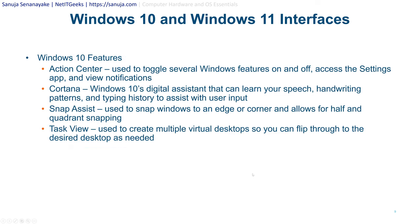Windows 10 features include the Action Center, which is used to toggle several Windows features on and off, access the Settings app, and view notifications. Cortana is Windows 10's digital assistant that can learn your speech, handwriting patterns, and typing history to assist with user input. Snap Assist is used to snap windows to an edge or corner, allowing for half and quadrant snapping. Task View is used to create multiple virtual desktops so you can flip through the desired desktop as needed.